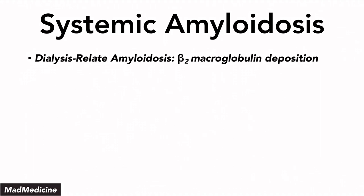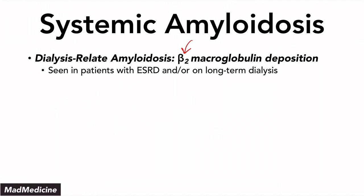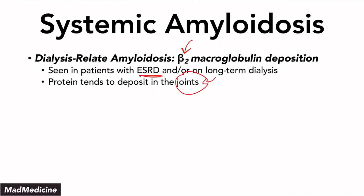Another high yield type is dialysis-related amyloidosis — many people forget about it, but it's very easy to get tested on. This is a beta-2 macroglobulin deposition seen in patients who have ESRD or end-stage renal disease on long-term dialysis. The proteins tend to deposit in the joints. So if you see someone with end-stage renal disease who is on dialysis and having painful joints, start thinking about dialysis-related amyloidosis with beta-2 macroglobulin being deposited.